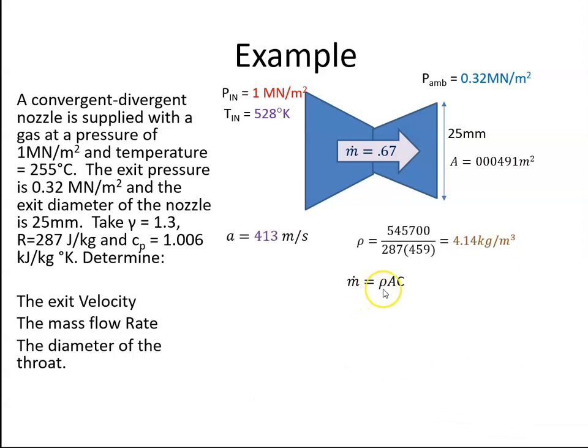So m equals rho AC. I have rho, I have the velocity C, which is the speed of sound. So I can get the area. The mass flow is 0.67 divided by 4.14 times 413, and that gives me an area of 0.003336.